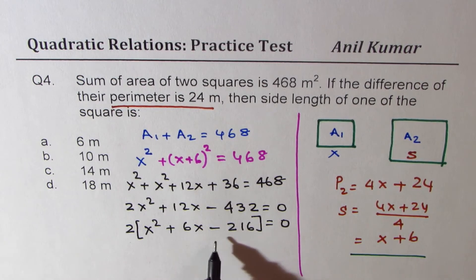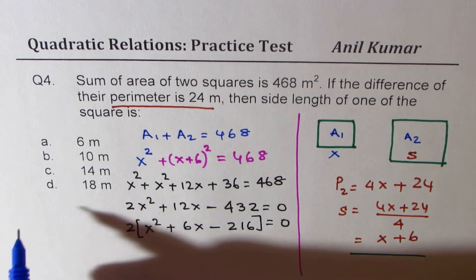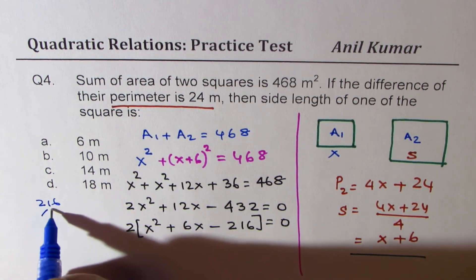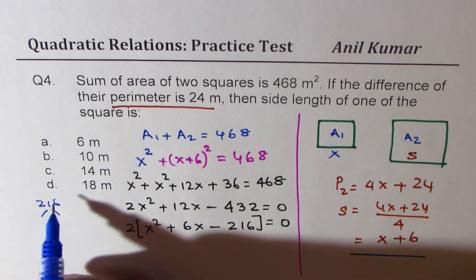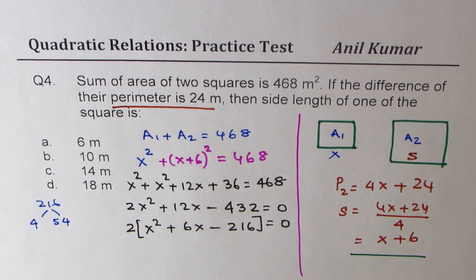Now we need to factor. So we are looking for sum and product to get 6 as our difference. So one method is to use prime factorization. That's a very effective method. So you could divide this by, let us say 4 we can divide this. So 4 times 5 is 20. 4 times 4 is 16.